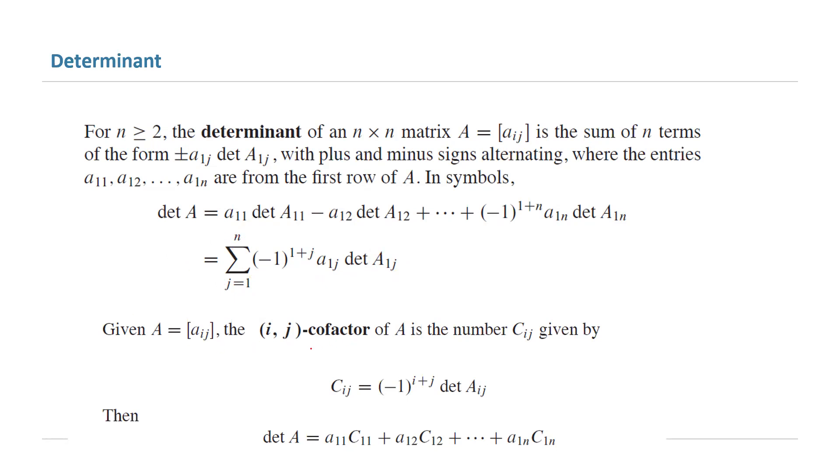In general, you can calculate the cofactor for the position i and j, denoted by c sub ij, equals negative 1 to power i plus j times determinant aij. Basically, the determinant of A is equal to a sub 1,1 times the cofactor in position 1,1 plus a sub 1,2 times the cofactor in position 1,2, and so on.